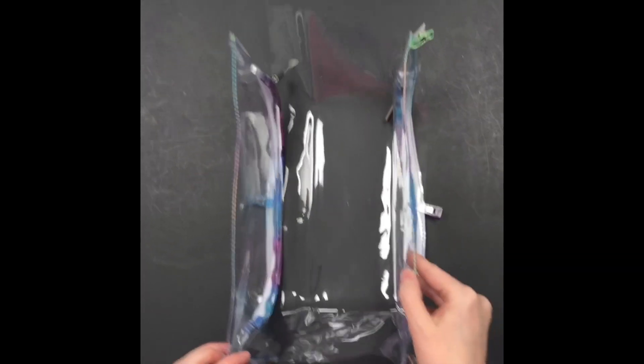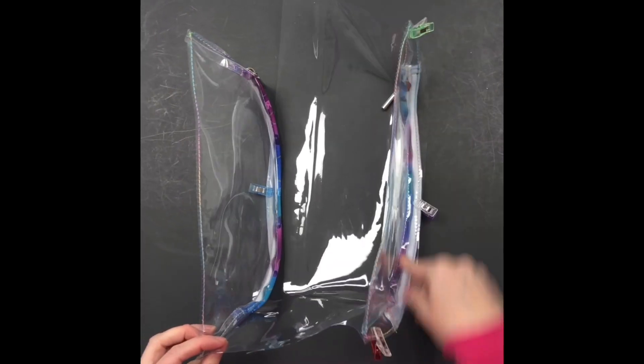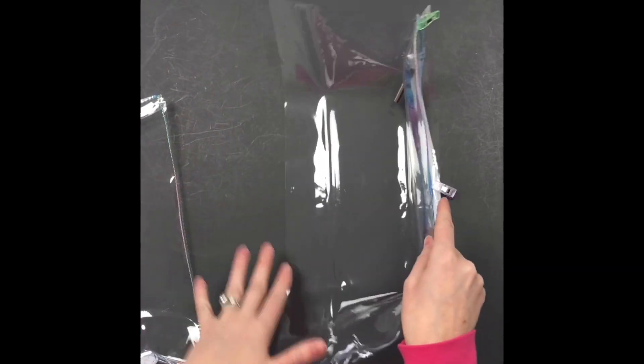You would just turn it right side out. So let's go to the machine, we'll sew this side and then we'll come back, clip this one in and repeat the same process.